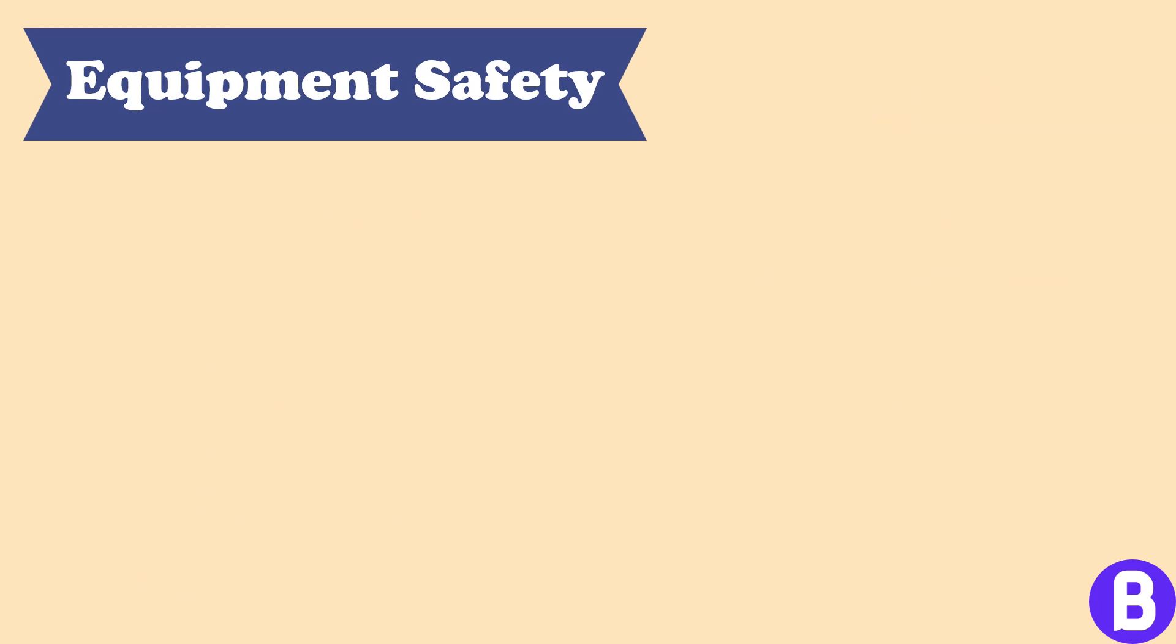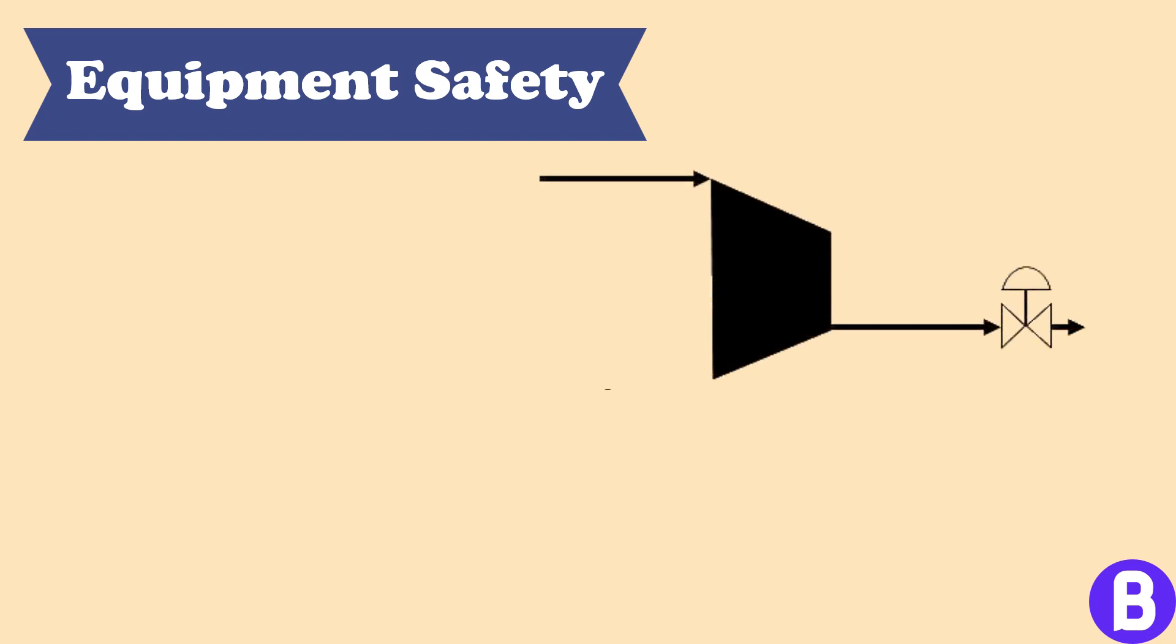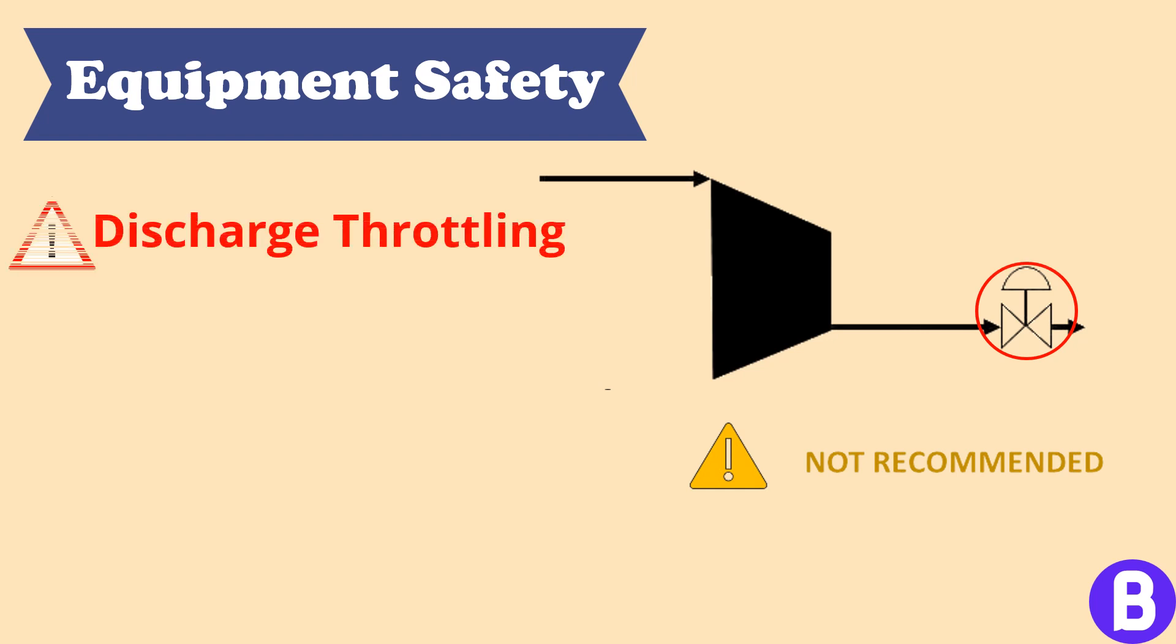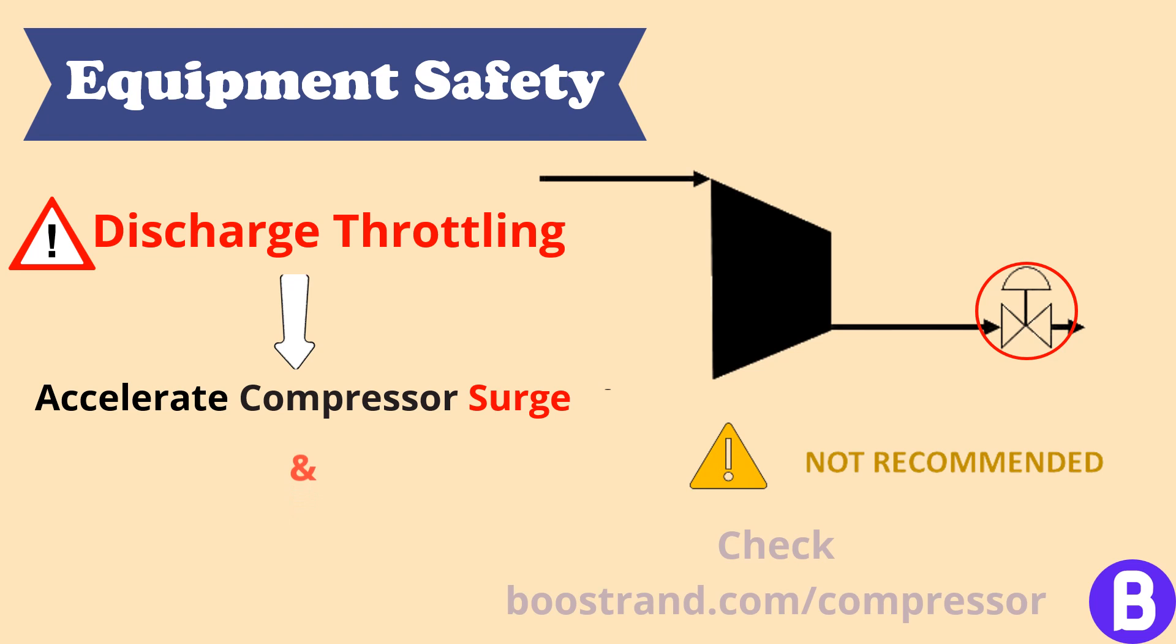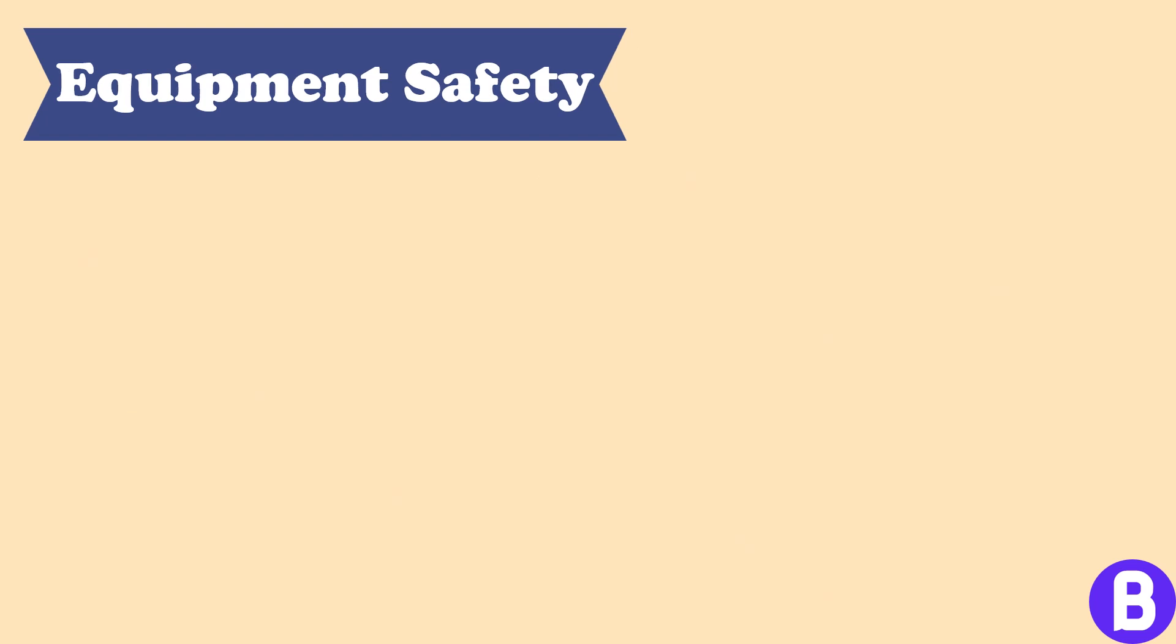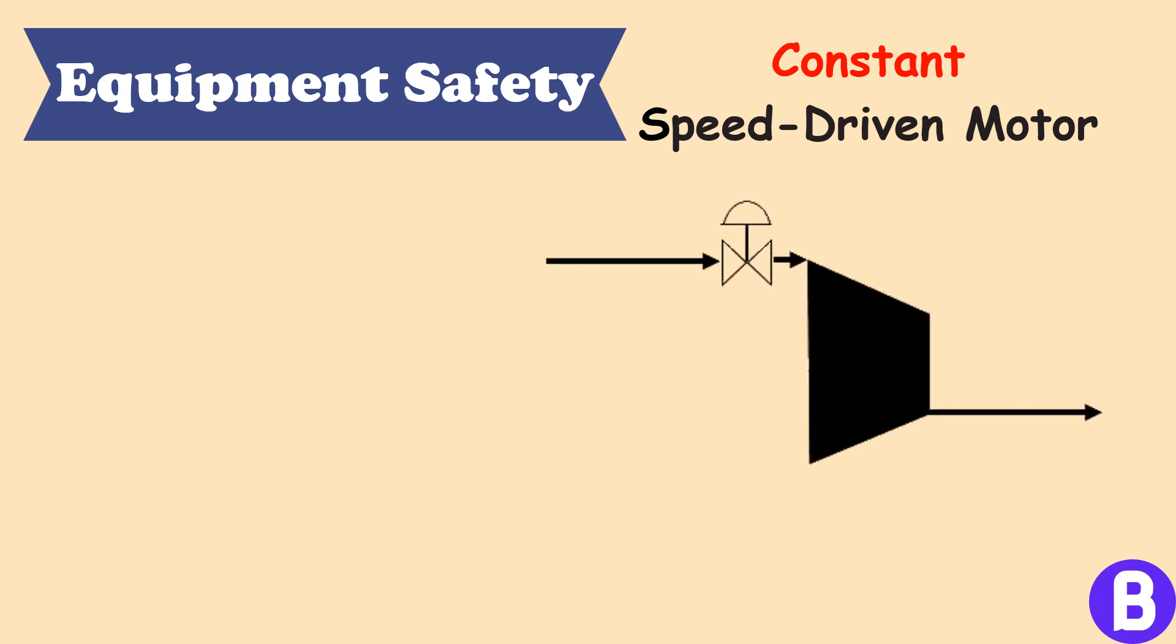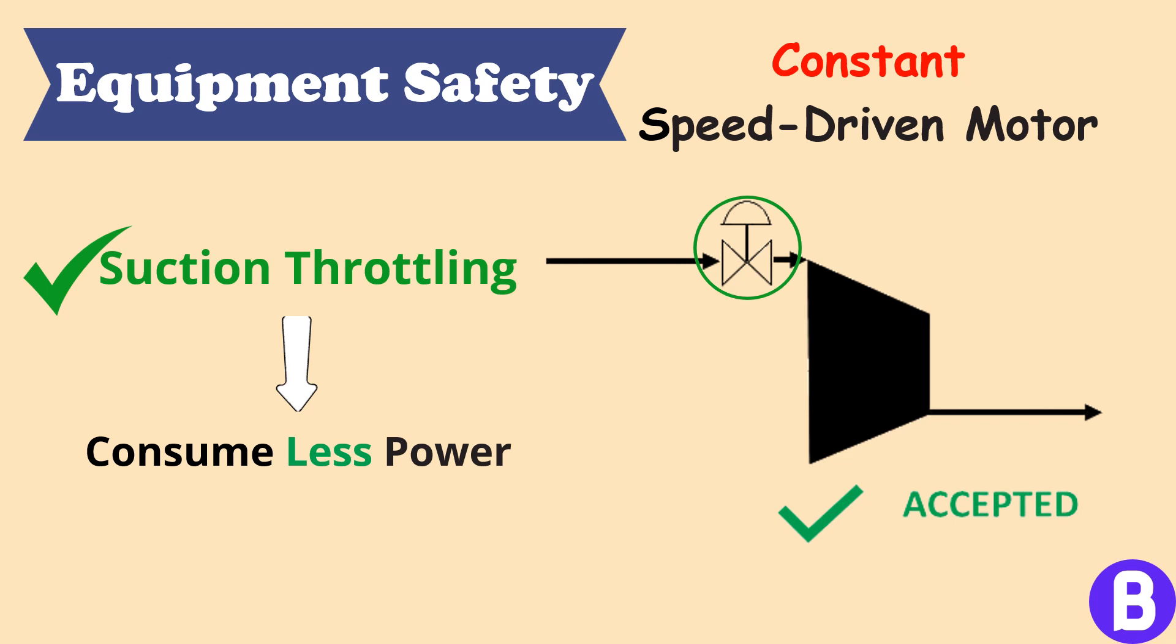However, if we want to control the capacity of a dynamic compressor, it's not recommended to place the control valve on the compressor discharge, discharge throttling, as it shall accelerate compressor surge and consume more power. If we are using a constant speed driven motor, then in this case it is more common to place the control valve on the compressor suction, suction throttling, as it consumes less power and its negative effect on compressor surge is less than in the case of discharge throttling.